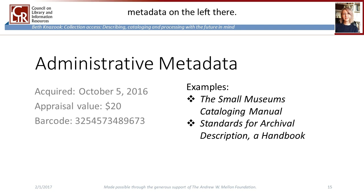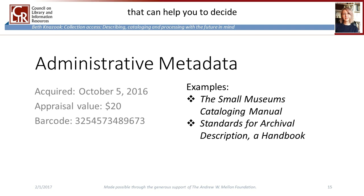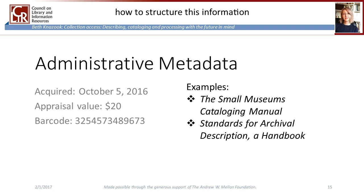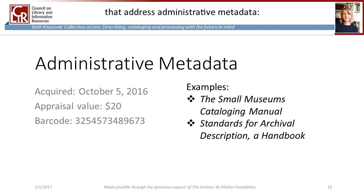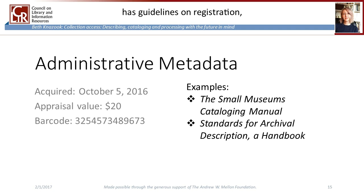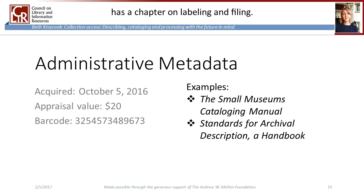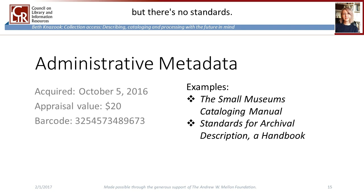Here's an example of administrative metadata. There are many different manuals that have been produced over the years that can help you to decide what administrative information you will require to manage your collections materials, but it's mostly up to you how to structure this information and where to keep it. This is generally not shared data, so as long as it is standardized internally, it can be used effectively in-house. Examples of manuals that address administrative metadata include the Small Museums Cataloging Manual by Museums Australia, which has guidelines on registration and naming conventions for file images, and the Standards for Archival Description Handbook, which has a chapter on labeling and filing.